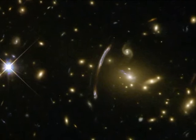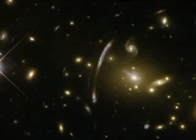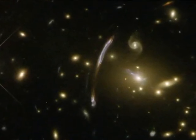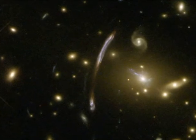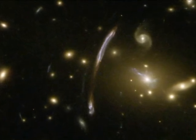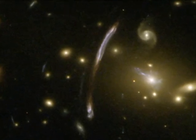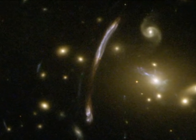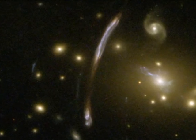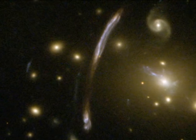Hubble's sharp eyes have caught other spectacular effects of Abel 2667's immense mass. The giant bluish arc, seen just off centre, is the magnified and distorted image of a distant background galaxy seen through the gravitational lens formed by the tremendous mass concentration of the cluster.